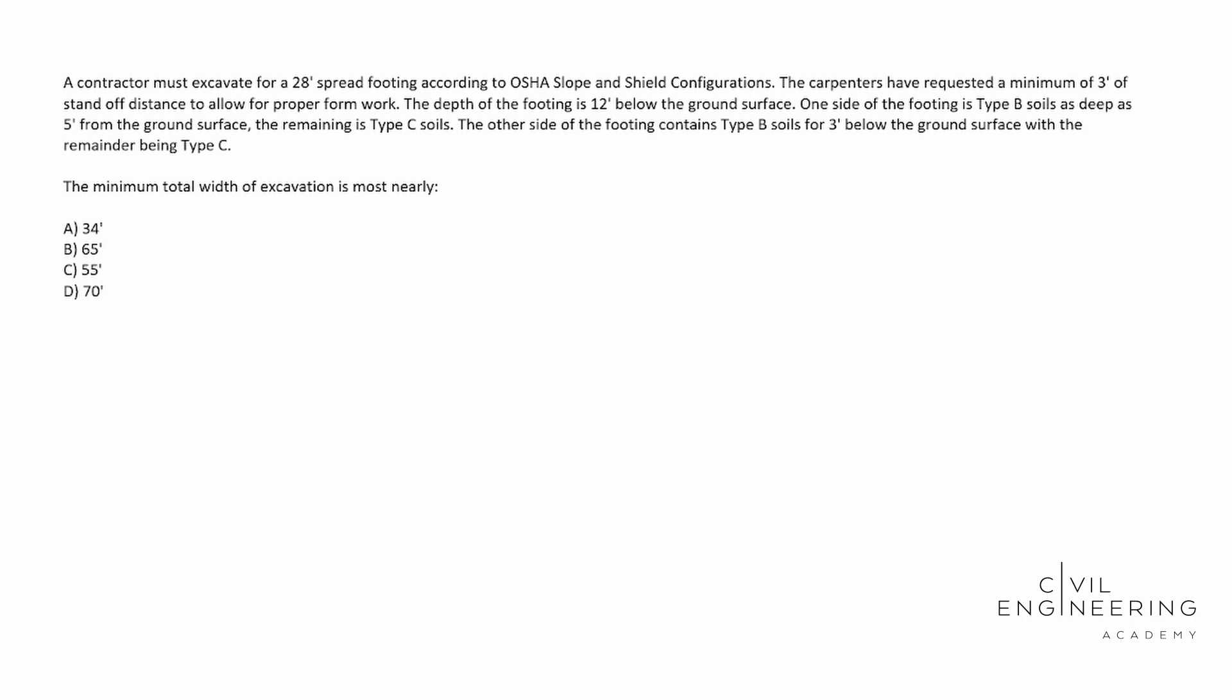So today we have a geotechnical slash site development problem. We're going to be talking about the slope and shield configurations in the PE manual. A contractor must excavate for a 28 foot spread footing according to OSHA slope and shield configurations. The carpenters have requested a minimum of three feet of standoff distance to allow for proper formwork.